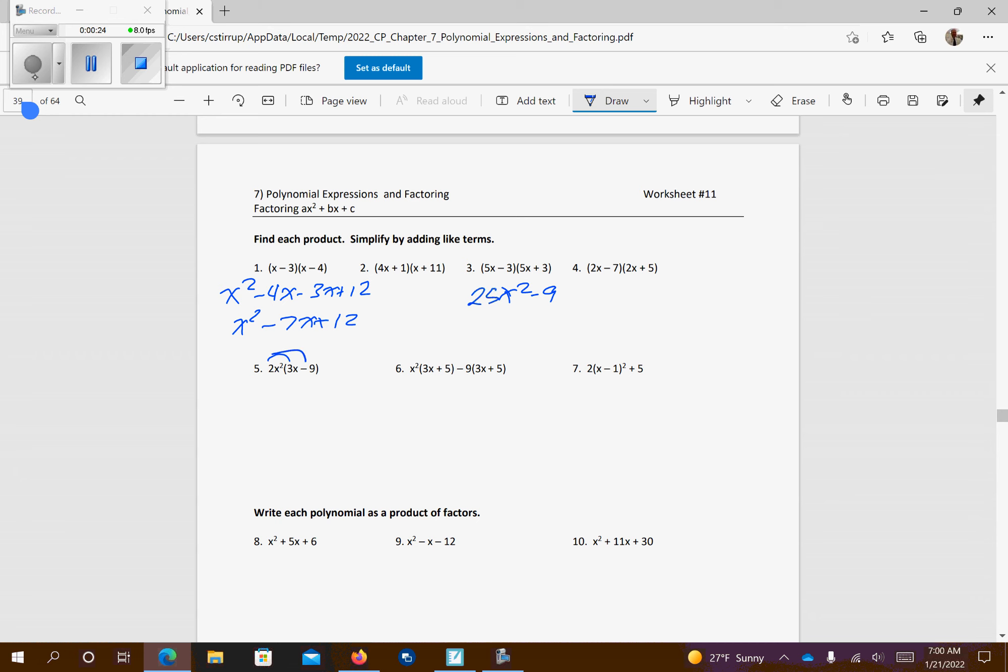This one we're going to distribute 2 over the parentheses, so I'm going to get 6x to the third minus 18x squared.